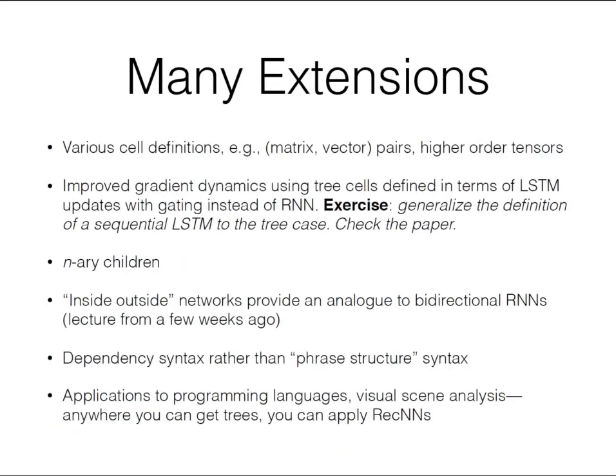There have been various extensions to recursive neural networks. You can change the cell definition — instead of representing words and internal nodes as vectors, you can represent them as pairs of matrices and vectors, giving a notion of function application which seems to be a good characterization of semantic processes. We also have problems with gradient propagation in trees: trees can be fairly long in terms of vanishing gradients, so you can generalize the cell definition to look more like an LSTM with gated information propagation. It's an exercise to generalize the sequential LSTM definition to the tree case.